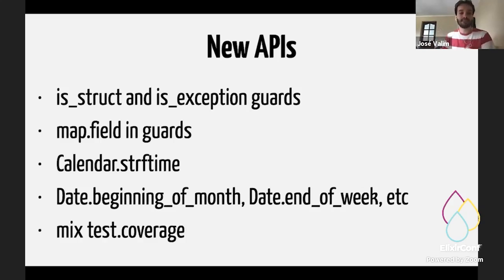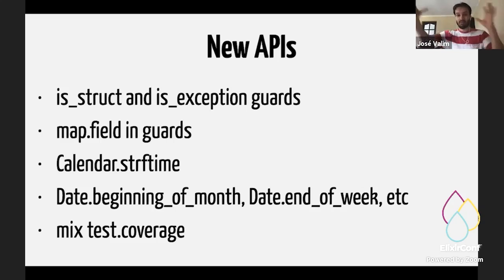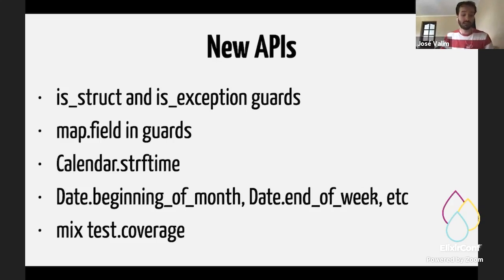We have added a new task called mix test --coverage. In Elixir 1.10, we added support for partition tests — if your tests can't run concurrently, or you have very long-running tests and want to spread them across CI on, say, four machines, you can partition tests. But the issue is that if you partition tests, the coverage is no longer correct because you're running in four different places. With mix test --coverage, you can now aggregate all those coverage reports from partition tests and generate a final combined report. You can also use it for umbrella applications to get a coverage report for the whole umbrella project instead of each individual app.